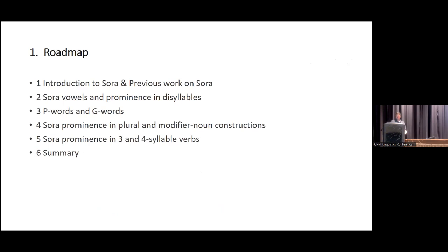We're going to briefly introduce Sora and the topic, specifically about Sora vowels and prominence and disyllables. Then a little bit about the concept of P or prosodic or phonological words and G or grammatical words, and then specifically looking at some data in Sora nominal forms — three and four syllable forms — and then in some three and four syllable verb forms, and then we'll summarize.